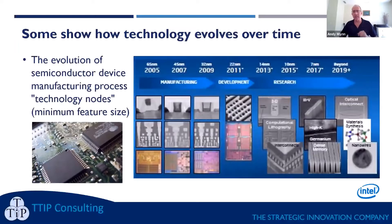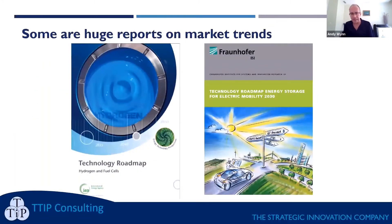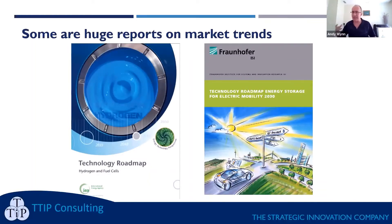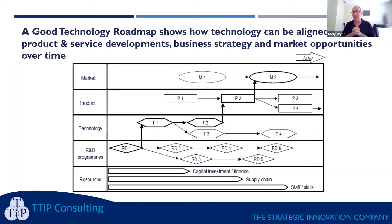The other type of technology roadmap you see is typically published by large industry trade organizations or by government trade and industry departments. You'll see things like a technology roadmap for hydrogen and fuel cells. These tend to be huge 200-plus page reports — essentially a data dump of market trends in the subject area — and they also list what's going on at universities in terms of upcoming R&D. They're very large and very difficult to navigate because they're so comprehensive.